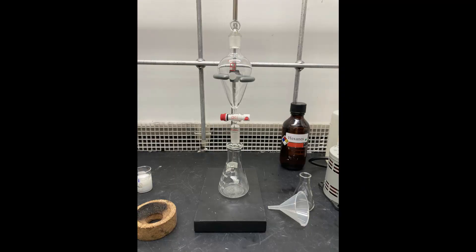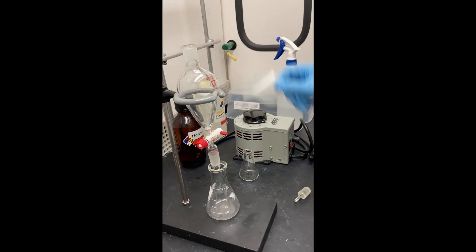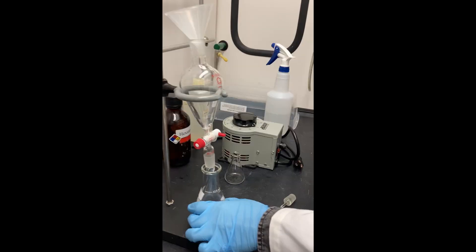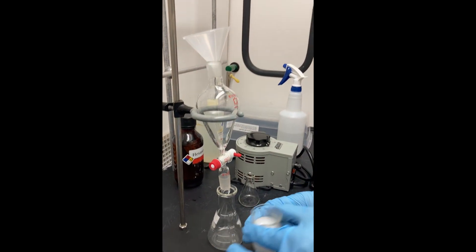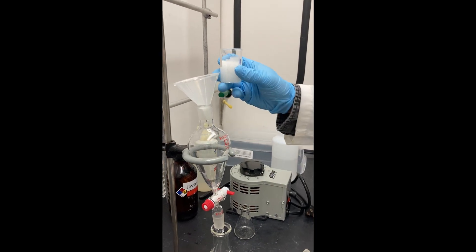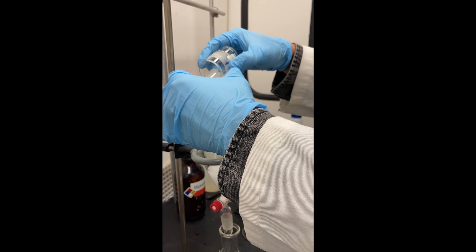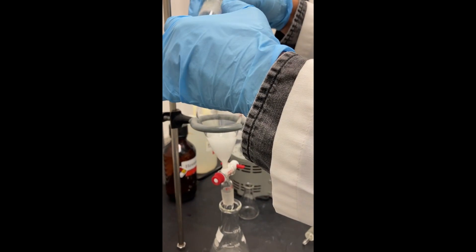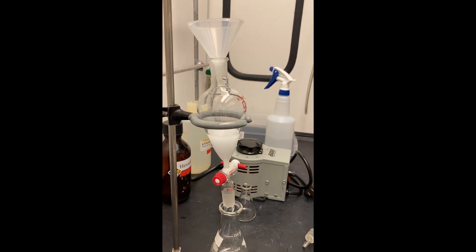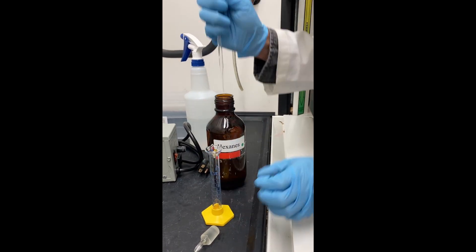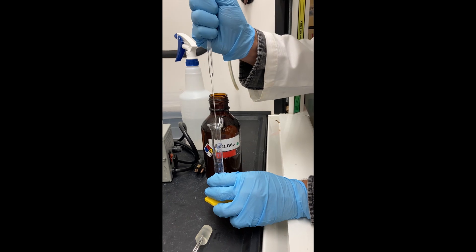Next, set up your glassware for the extraction using your separatory funnel. Start by adding the 25 milliliters of distillate to your separatory funnel. Then you'll want to measure out 10 milliliters of hexanes and add them to the separatory funnel as well.